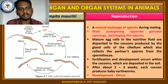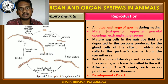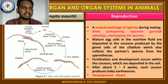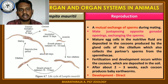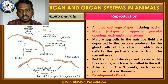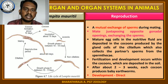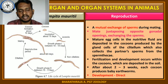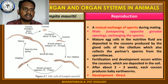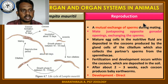Due to protandry — the maturation of male gametes earlier than the female — self-fertilization is avoided. So cross-fertilization takes place in Lumbricus terrestris. Cross-fertilization means the mutual exchange of sperms takes place between two worms. When the exchange takes place during mating, the mutual exchange of sperms also takes place, and they mate in the opposite direction.